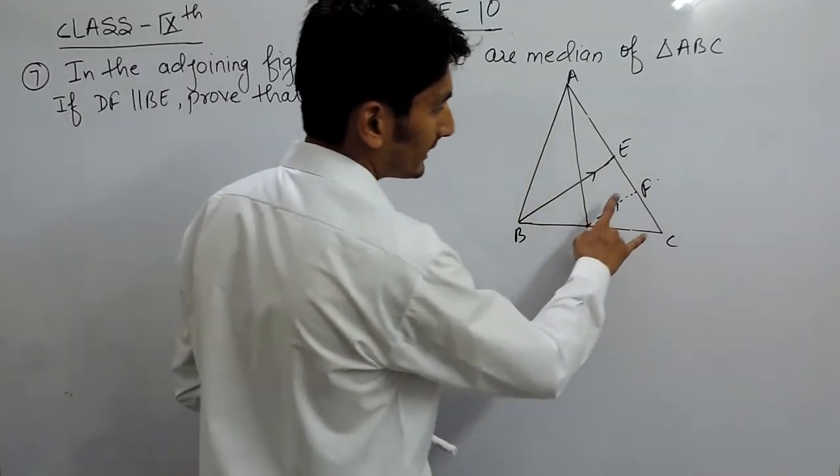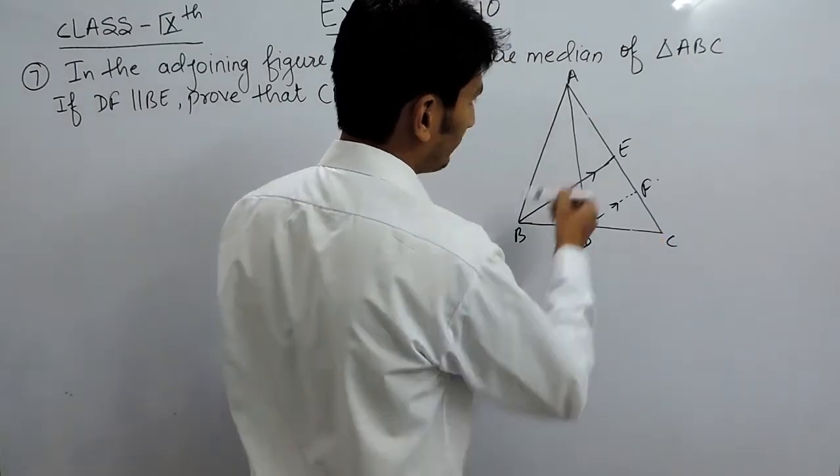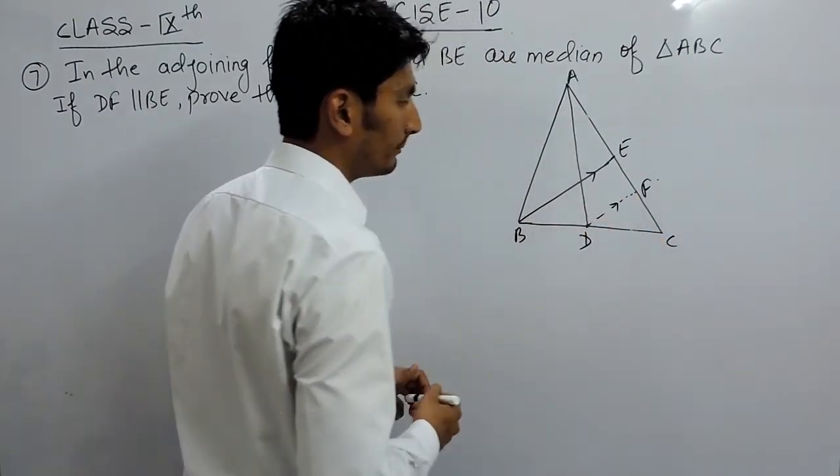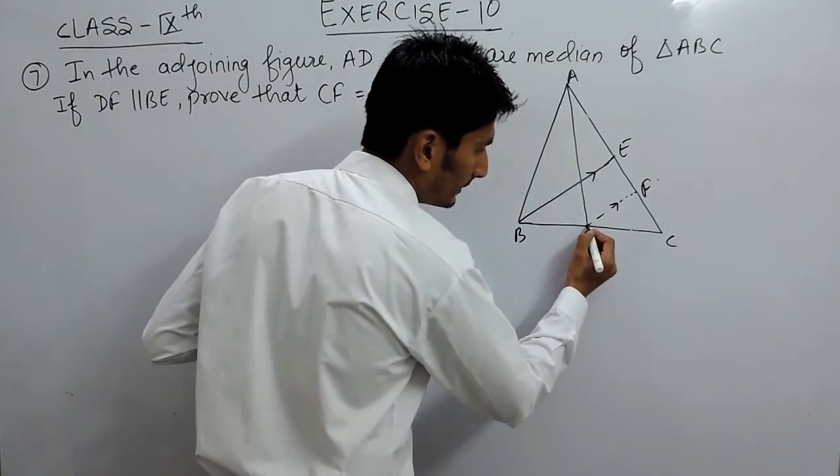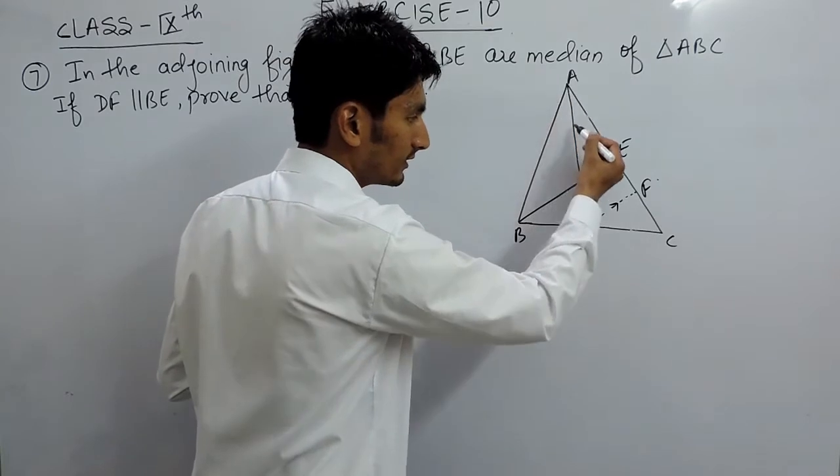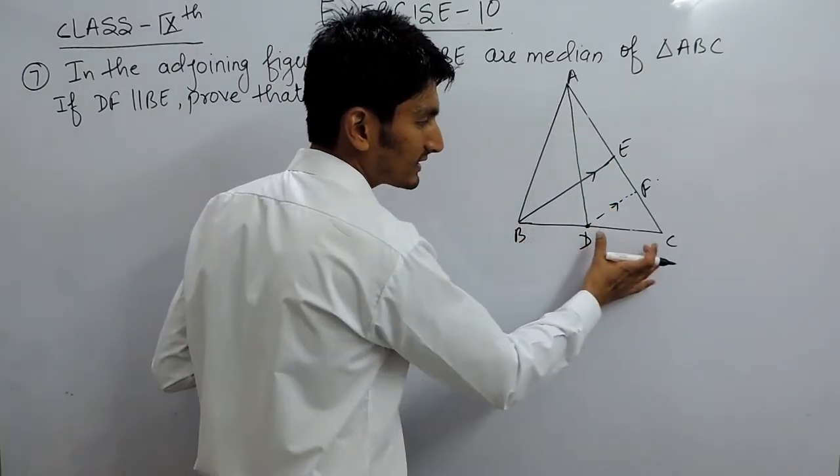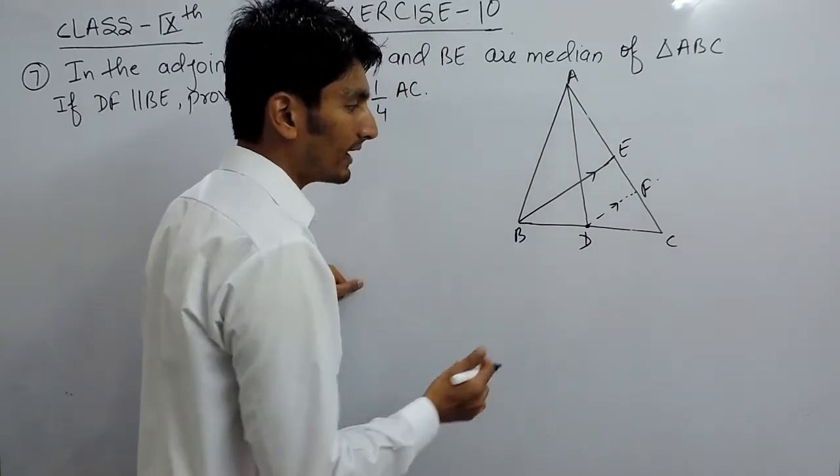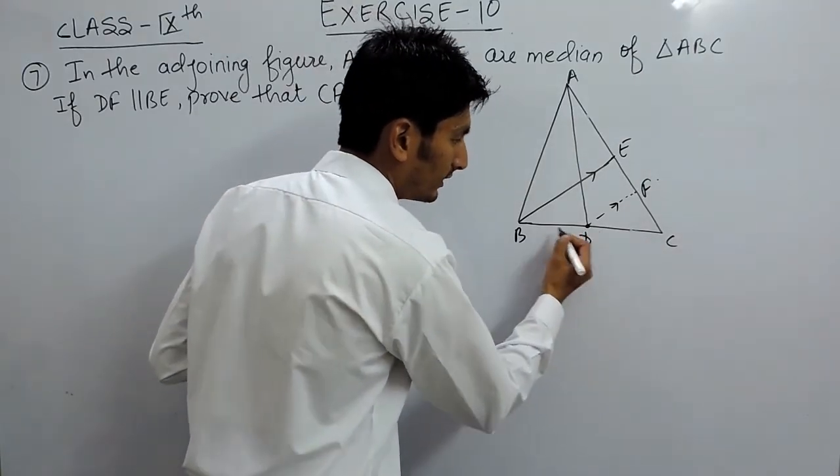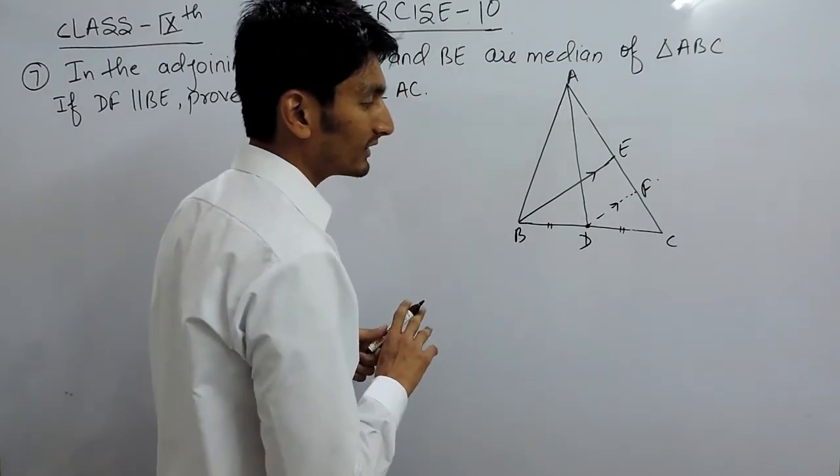We have to prove that CF is one-fourth of AC, where AD and BE are given the medians. We know that medians are the line drawn from the vertex in a triangle which divides the opposite sides into two equal parts. This point should divide this side into two equal parts. In other words, D is the midpoint.